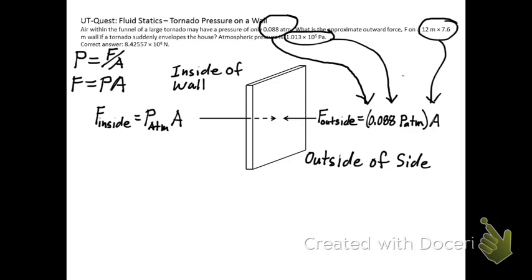That multiplier is given, your atmospheric pressure is given, the area of your wall is given. So we have an imbalance of forces - the force inside is going to be greater than the force outside due to this multiplier.